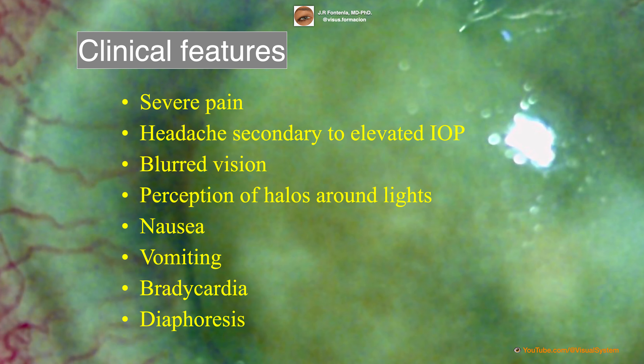The presentation of phacomorphic glaucoma is similar to acute angle closure glaucoma. Patients may experience severe pain and headache secondary to elevated intraocular pressure, blurred vision, perception of halos around lights, nausea, vomiting, bradycardia, and sometimes diaphoresis.